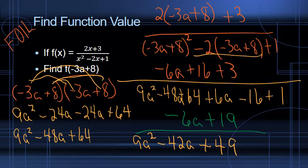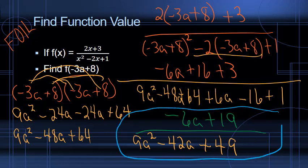So when f of x equals 2x plus 3 over x squared minus 2x plus 1 and we're asked to find f of negative 3a plus 8, our answer is negative 6a plus 19 over 9a squared minus 42a plus 49. We had to FOIL, distribute, and combine like terms — a lot going on in numerator and denominator. But there's our answer — hot dog!